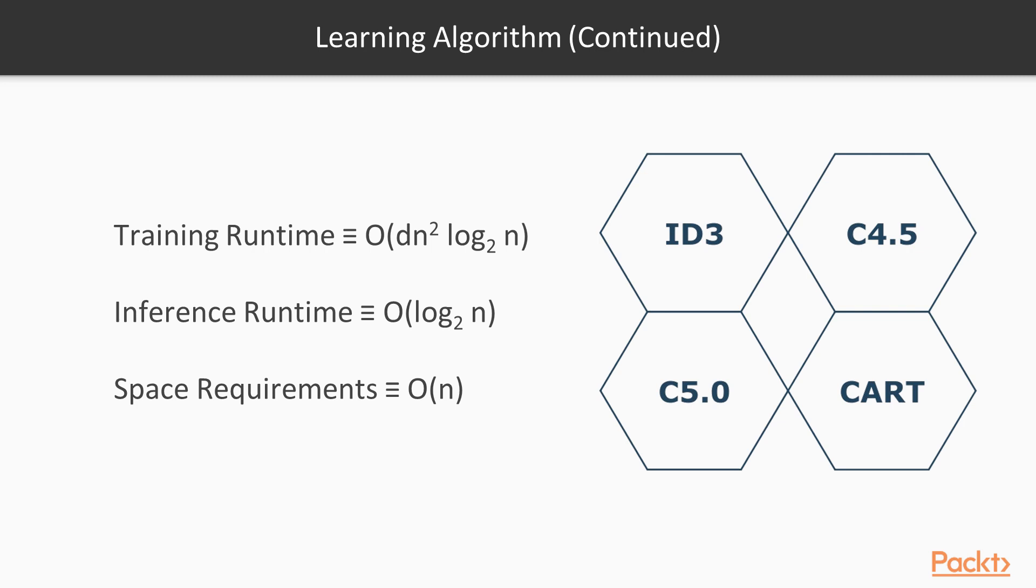There are four common algorithms in the literature. The oldest of them is ID3, but it fails on numerical data, so C4.5 and C5 algorithms address this limitation by allowing numerical values. Finally, there is CART method, which takes it further and allows decision trees to be used in regression analysis. CART method is used by scikit-learn library, which is the ML or machine learning library we are using in this course.